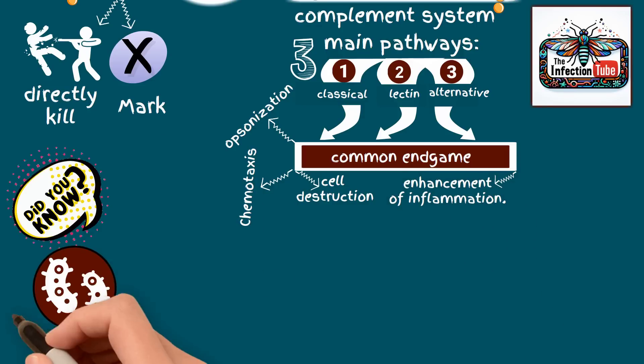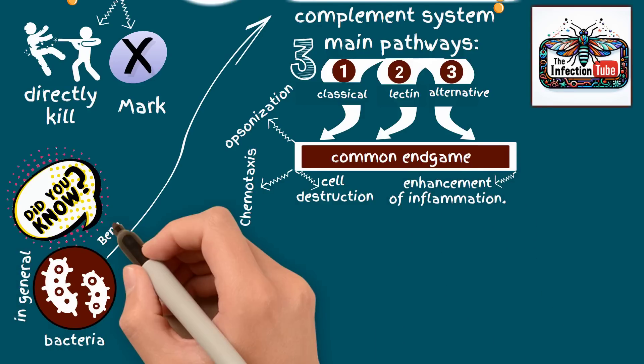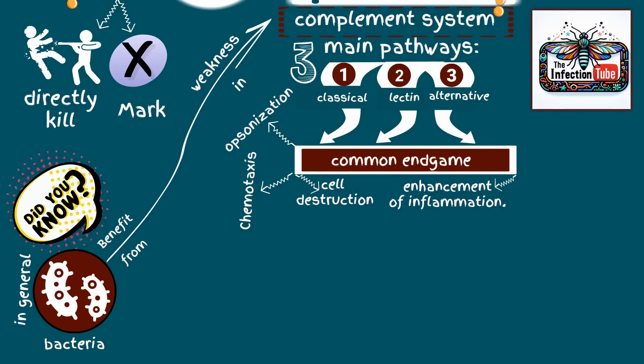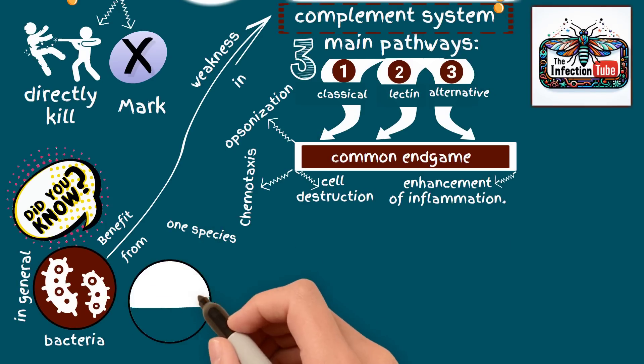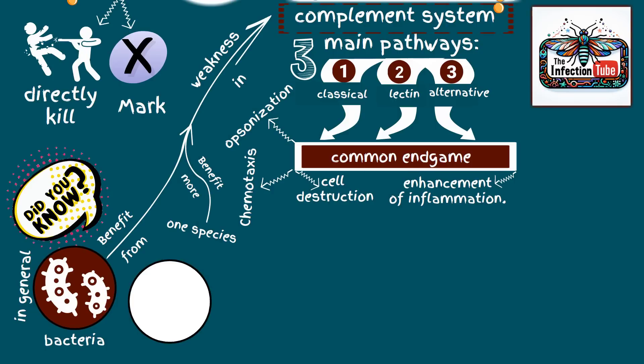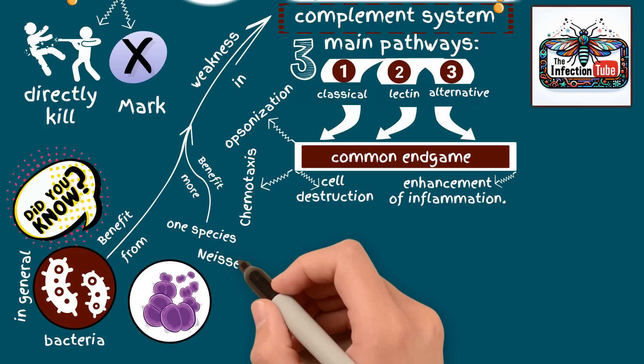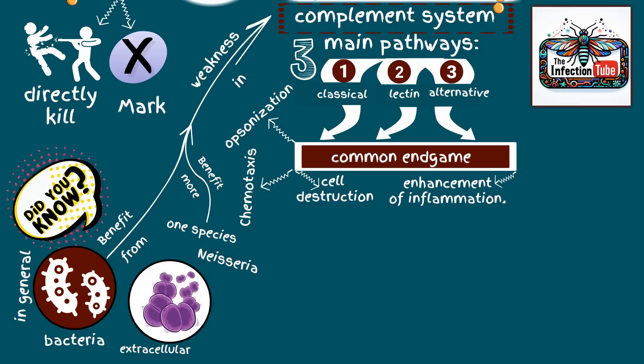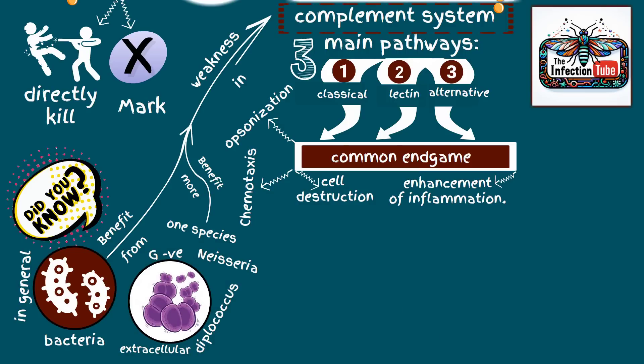Did you know? In general, bacteria can benefit from weaknesses in the complement system, but one species can benefit from these weaknesses more effectively than the others. Can you guess whom? It's the Neisseria species, which is an extracellular, gram-negative, diplococcus.